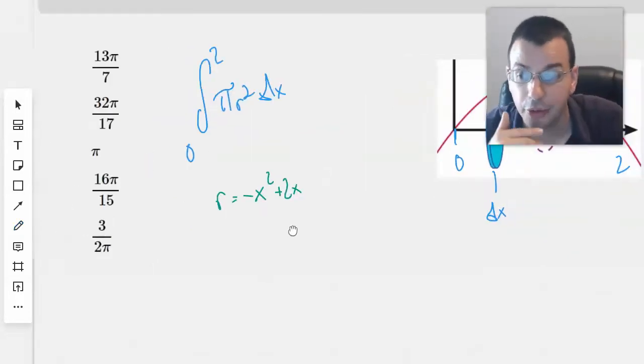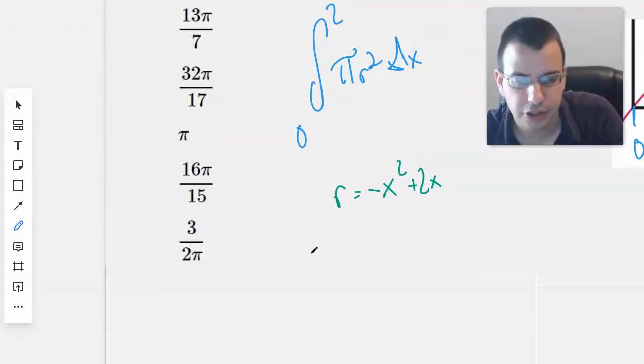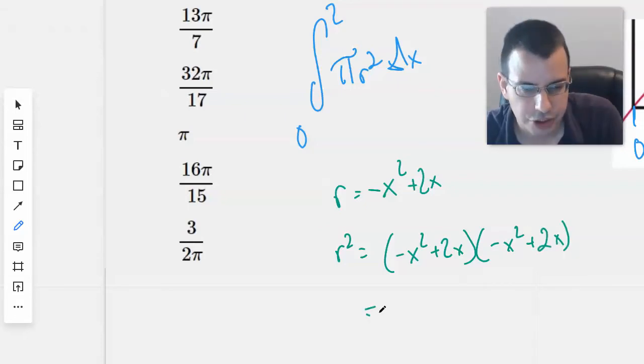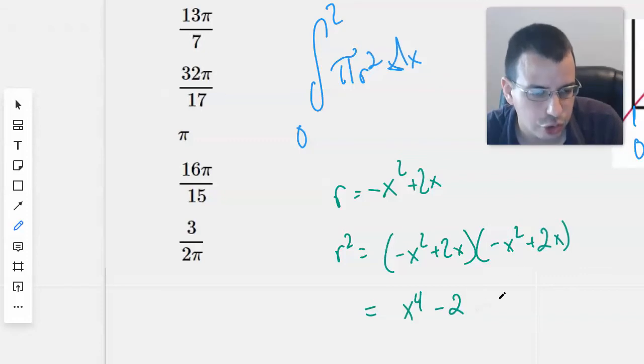So then we're going to have to find out what r squared is. And r squared will be negative x squared plus 2x times negative x squared plus 2x. Which equals, all right, so negative x squared times negative x squared is x to the fourth. Negative x squared times 2x will be negative 2x cubed. And I'll put another 2 in here because we know it's going to happen twice.